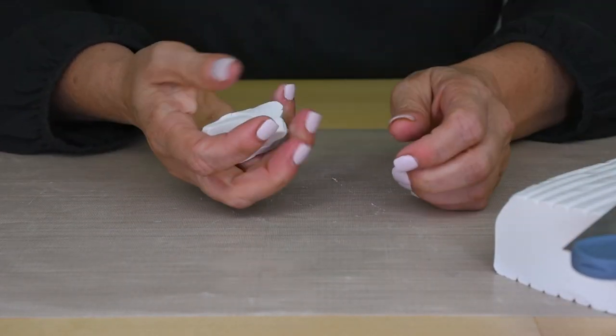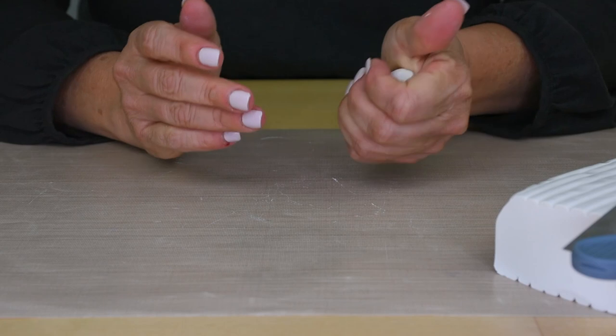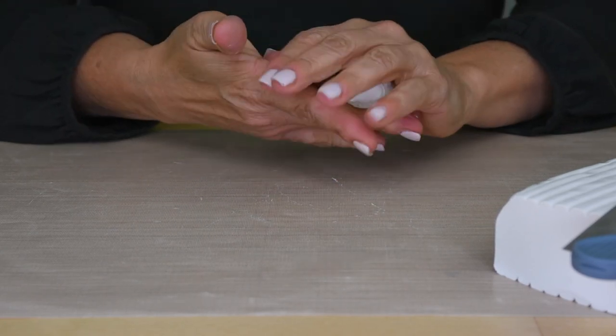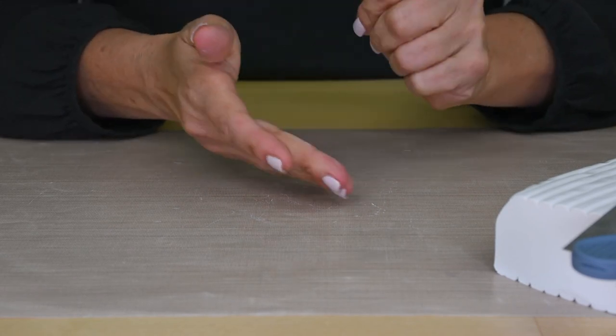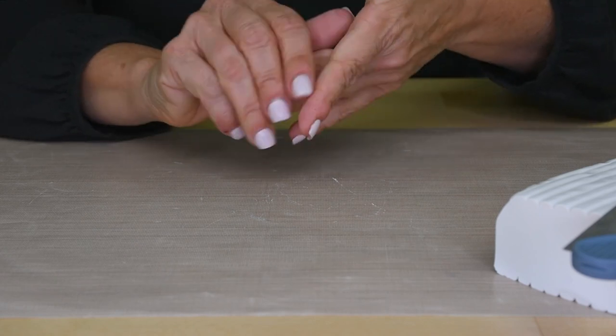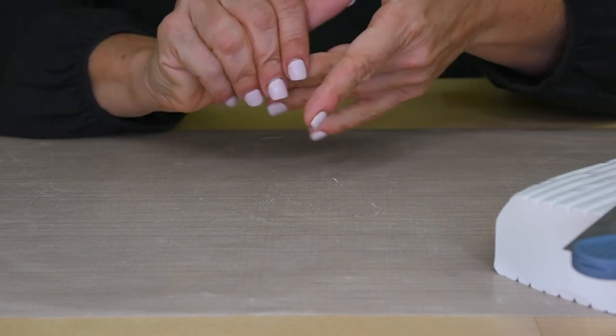And then you're just going to hand condition it. And by that I mean move it around in your hand, squish it, knead it. You don't really need to do this for that long, maybe 10 to 20 seconds depending on the firmness of your clay, and you can already tell it's becoming more malleable and workable.